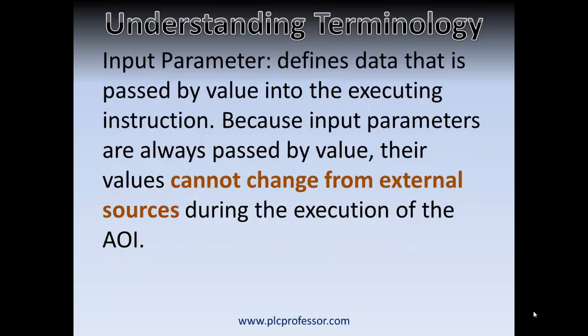The other form we have is an input parameter. This defines data that is passed by value into the executing instruction. Because input parameters are always passed by value, their values cannot change from external sources during the execution of the code. Whereas in-out parameters referred to a tag out in the general tag population, this type of parameter reads the tag or value at the beginning of execution and it does not change during execution. The value is passed in from that tag and then accessed during the execution of the code in the add-on instruction. Once it's passed in by value, that value is used throughout execution.